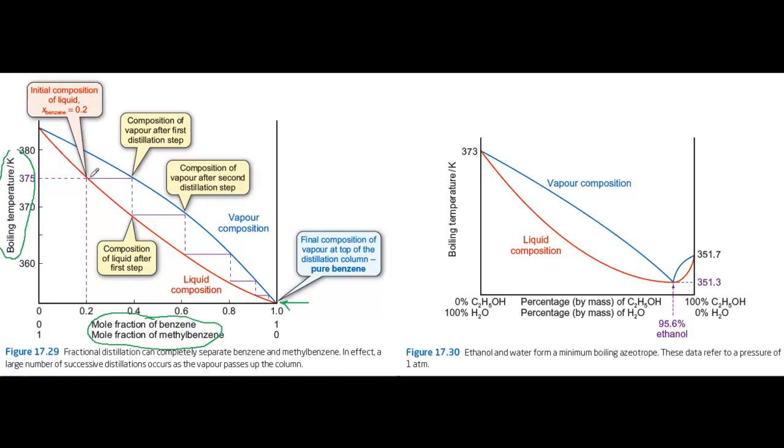So, for example, if you took this mixture of composition 0.2 mole fraction benzene and you boiled it, you would get a vapour with composition about 0.4. You work it out by drawing this horizontal line.